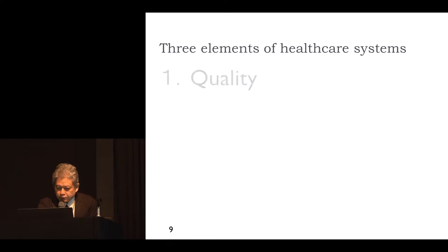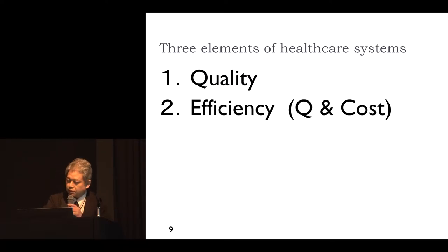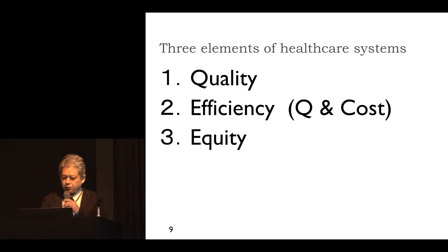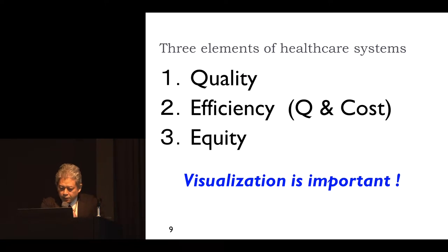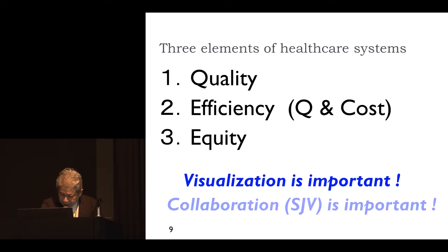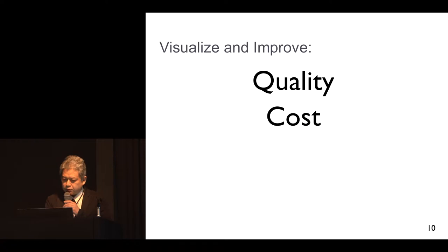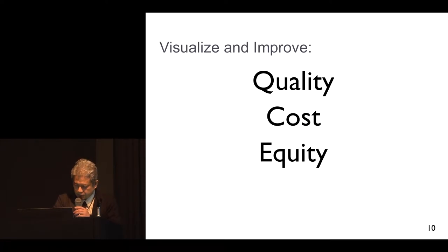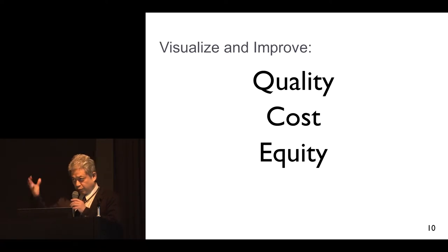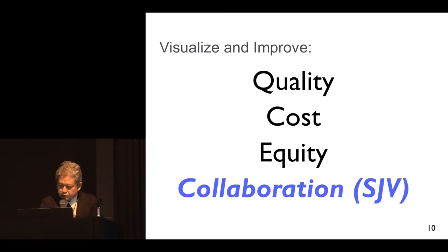Now we have been integrating these databases and trying to visualize quality, cost, and access of healthcare at institutional and regional levels. For healthcare systems, there are three important dimensions: quality, efficiency or cost, and equity. I'm going to show you some examples of visualization and improvement in quality, cost, and equity. Based on this visualization, we need to transform our healthcare system, and intersectoral collaboration is very important for that transformation.